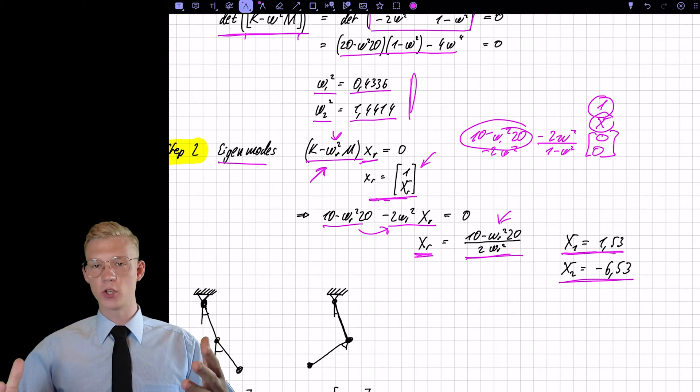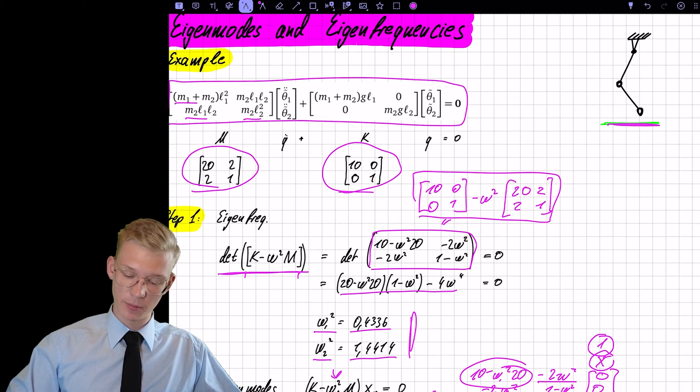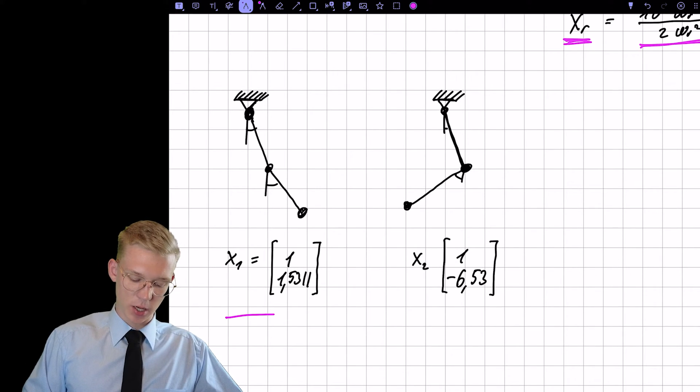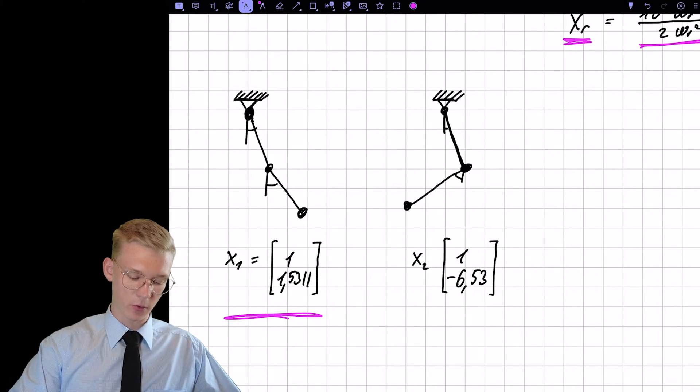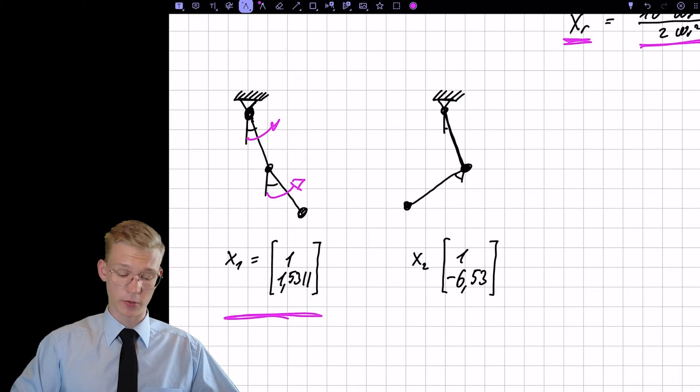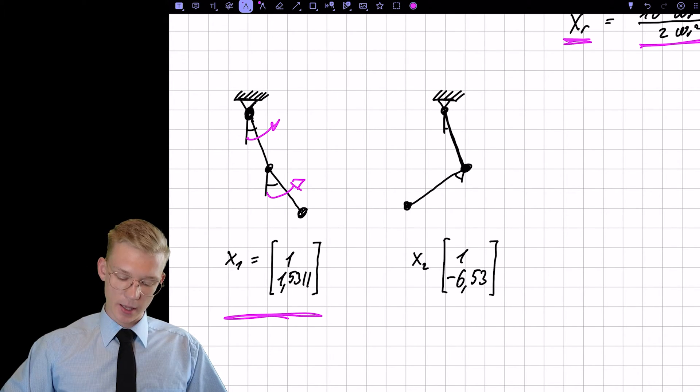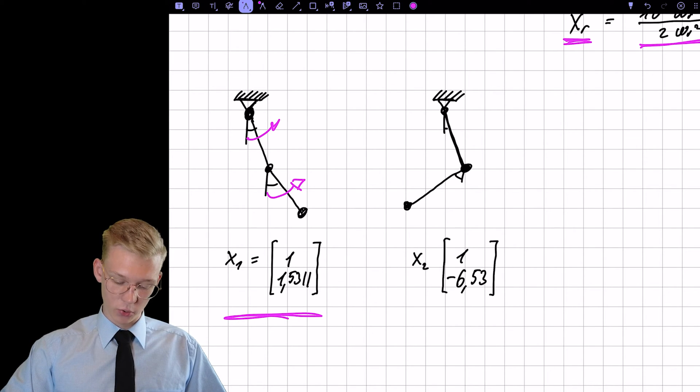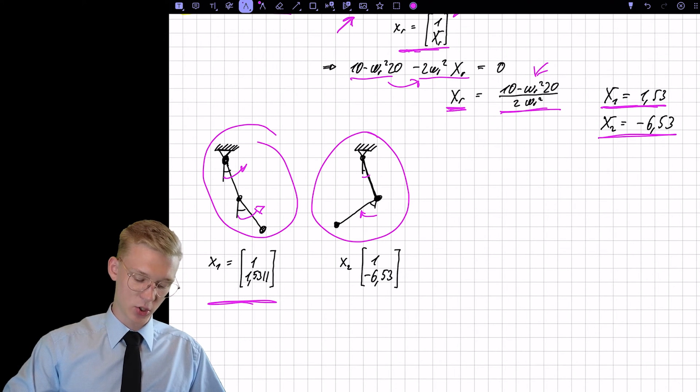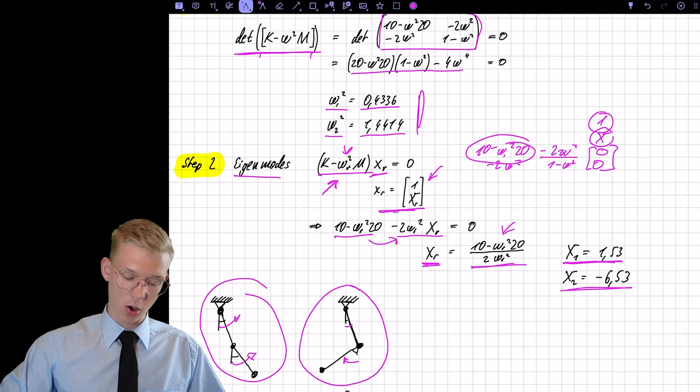So can we visualize it? Well, in the example of a double pendulum that we had here, we can actually visualize it. So the first eigen shape looks something like this. So we have one unit in this direction and then we have one and a half units basically in this direction. We're working with absolute angles. For the second eigen mode, we have one unit again in this direction and minus 6 units in the other direction. So these are the two eigenshapes of our pendulum.